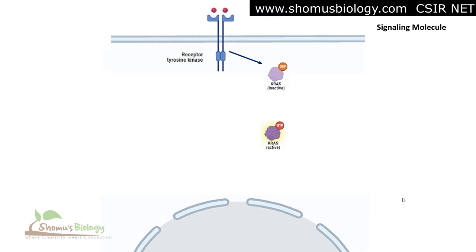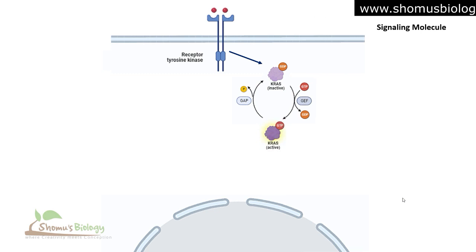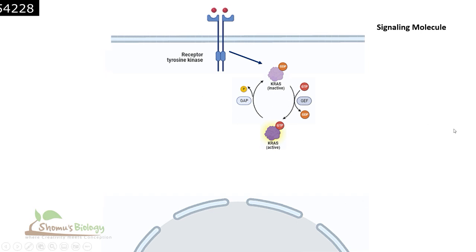The exchange of GDP for GTP is carried out by GEF, or guanosine exchange factor. This active KRAS can be inactivated by hydrolyzing the GTP back into GDP, done by the GAP protein. This cycle continues. Let's now look at the active KRAS associated with GTP.